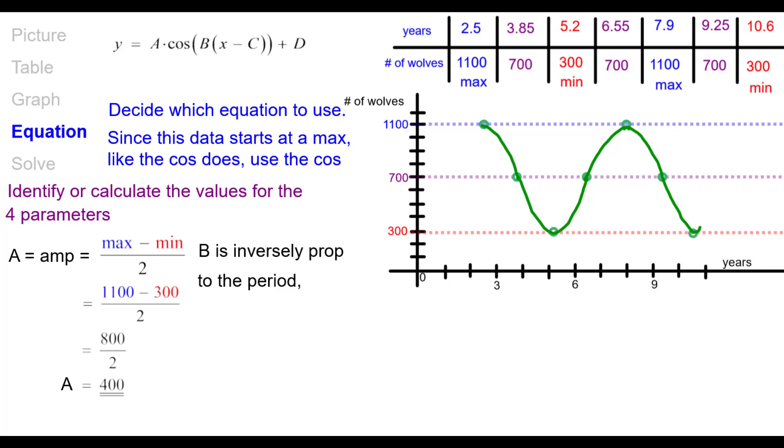B is inversely proportional to the period. We can use either one of these equations right here. Now if we look at this, what is the period of this graph? So you can see going from max to max, we go from 2.5 to 7.9. Also from here to here, if you look at the graph, look at the table or the graph. And if you subtract those two values, you get 5.4, and that is the period. That's how long it takes this curve to go through its complete cosine curve. So B is equal to 2 pi divided by that period, 5.4. So we've got A, we've got B. Let's go ahead and look at C.